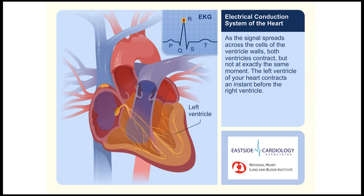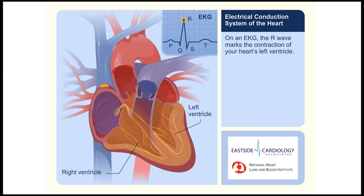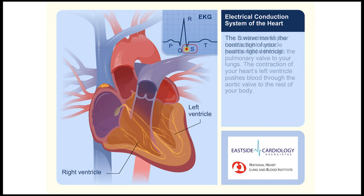The left ventricle of your heart contracts an instant before the right ventricle. On an EKG, the R wave marks the contraction of your heart's left ventricle, and the S wave marks the contraction of your heart's right ventricle.